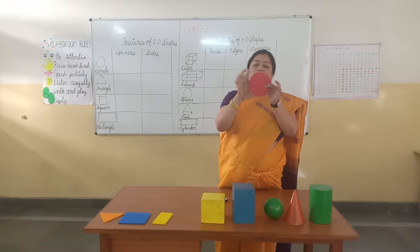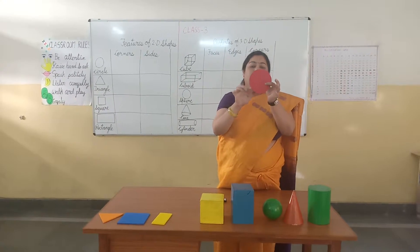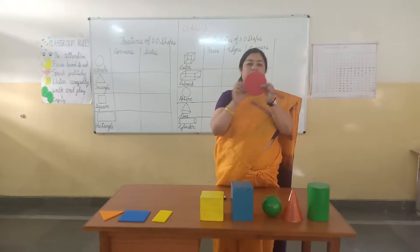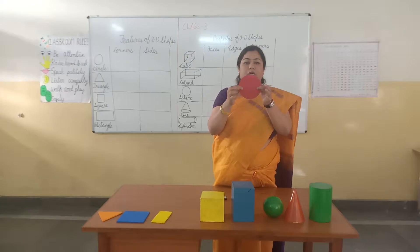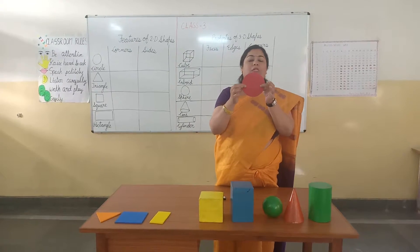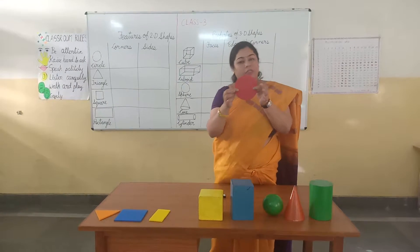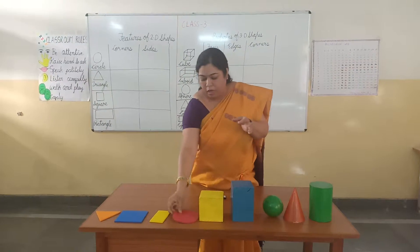The next shape is a circle. You can see, circle has no corners and no sides. That means a circle has 0 sides and 0 corners.